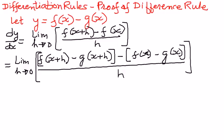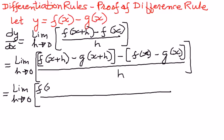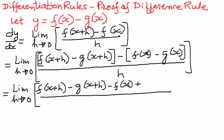Now, we can distribute the negative sign to every one of the terms inside the second set of brackets in the numerator part, and then simplify it as follows. The limit as h approaches 0, the numerator is f of x plus h minus g of x plus h. Distributing the negative sign: minus of f of x becomes negative, and negative times negative gives us plus g of x. The whole thing divided by h.